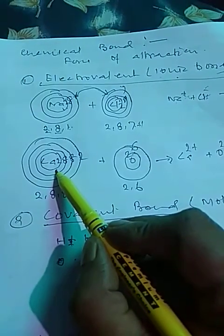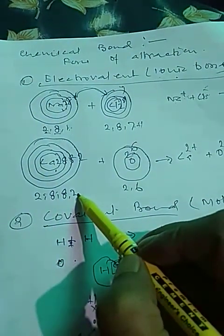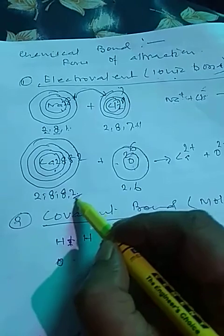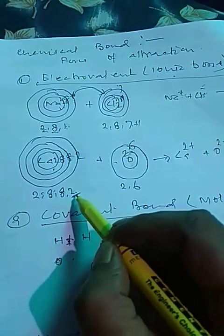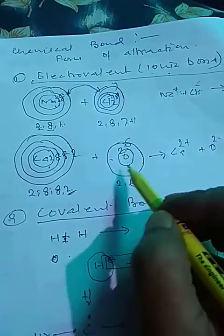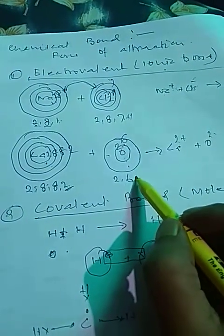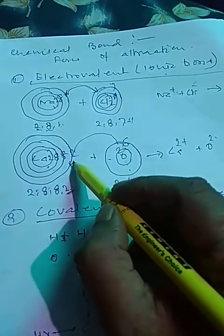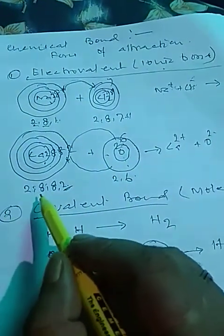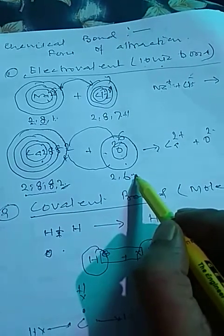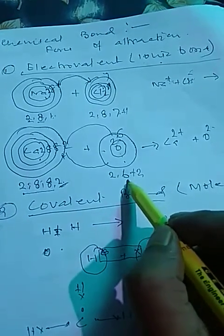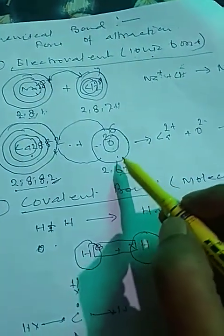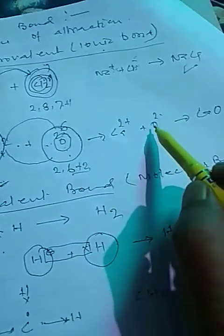This is your calcium — its configuration is 2, 8, 8, 2. When calcium reacts with oxygen, it needs to achieve 2, 8, 8, so it will lose two valence electrons. Oxygen's configuration is 2, 6, so it needs two more electrons. These two electrons are transferred. As a result, calcium's configuration becomes 2, 8, 8 and oxygen's becomes 2, 8. Both atoms acquire the inert gas configuration, forming calcium ion and oxide ion.